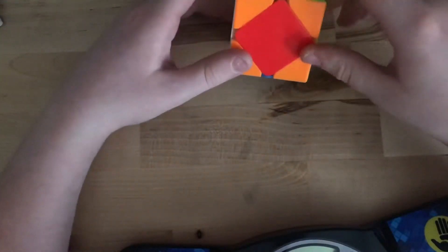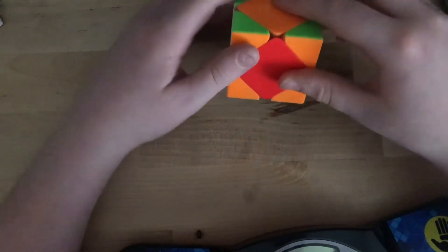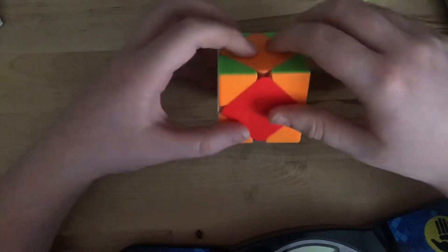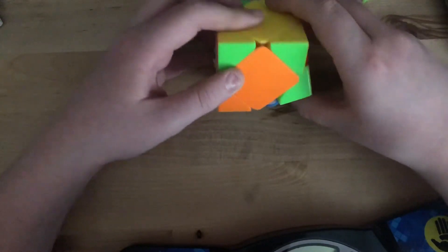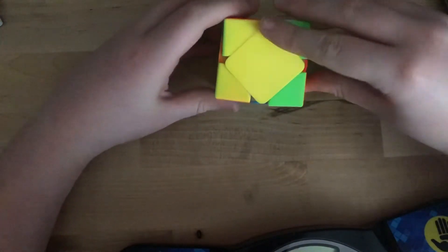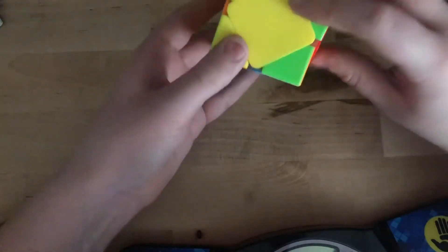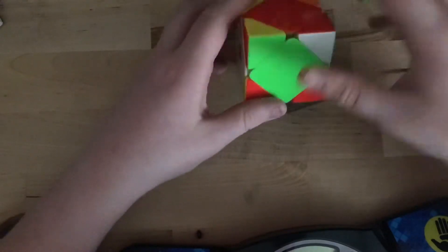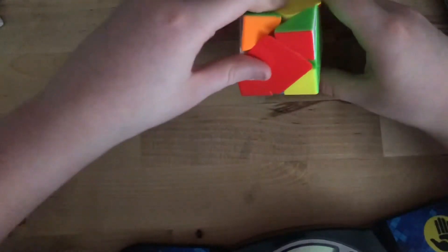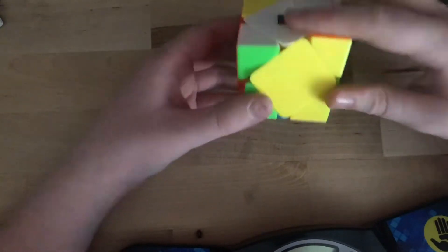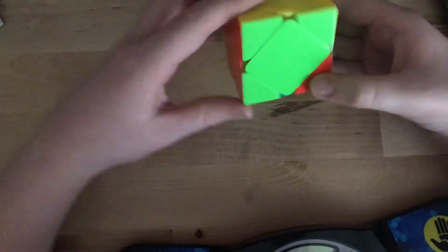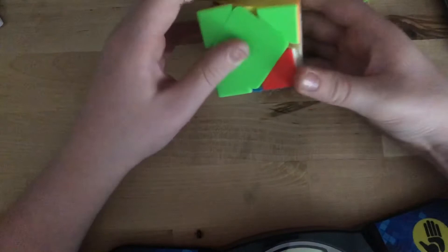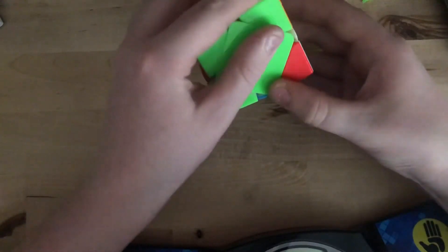Now we're gonna move this center up, so we're moving them up and we do this algorithm again. Right prime, left, right, left prime, full 180 on the cube, right prime, left, right, left prime. Mother of god!